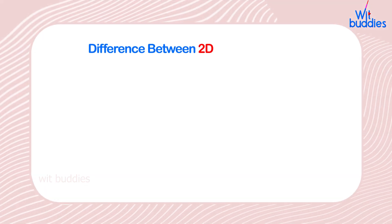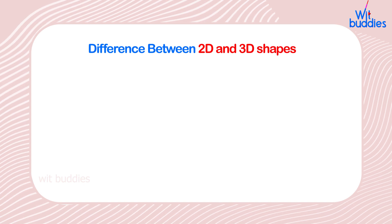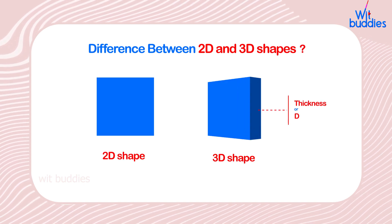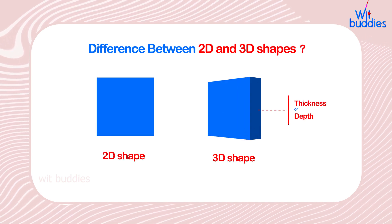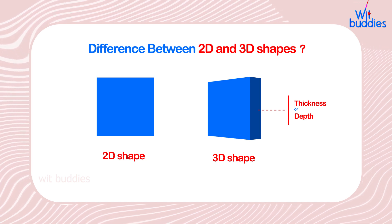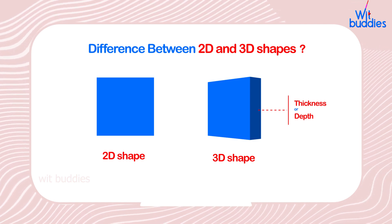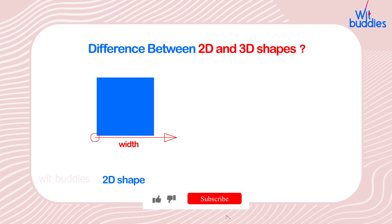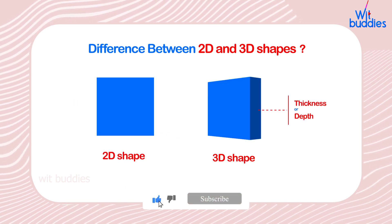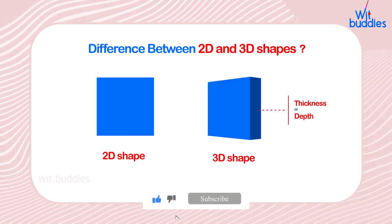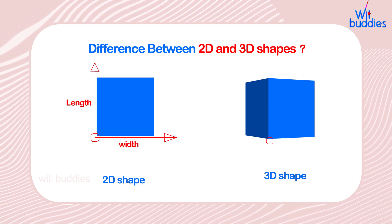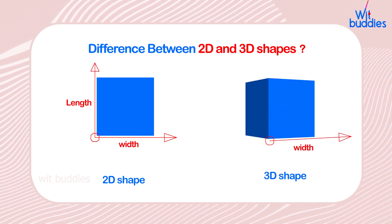The difference between 2D and 3D shapes: the only difference between a 2D shape and 3D shapes is that a 2D shape is a flat object — it has length and width. 2D shapes do not have a thickness or depth.